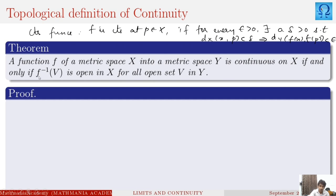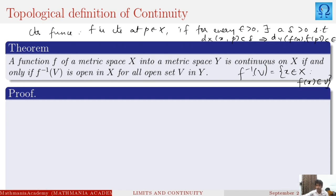The equivalent statement that we are going to prove is that f inverse of V is open in X for all open sets V in Y. First of all, f inverse of V collects the points in the metric space X such that f(x) is a member of V. We have to prove this set is going to be open whenever the set V is open.